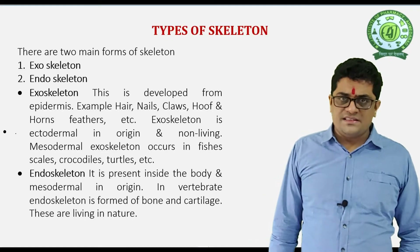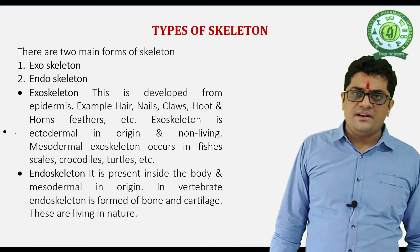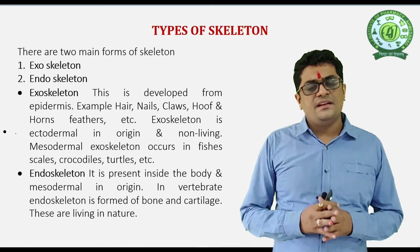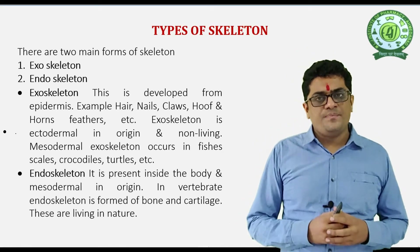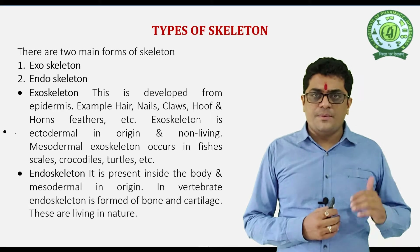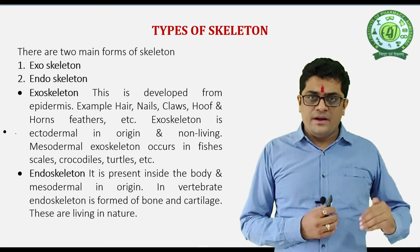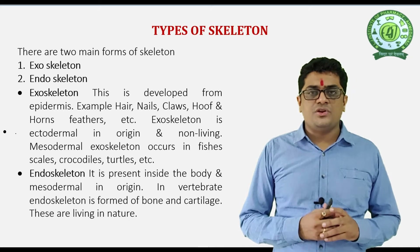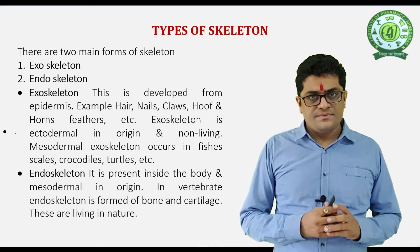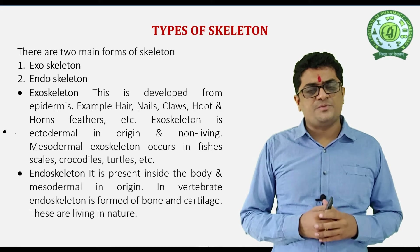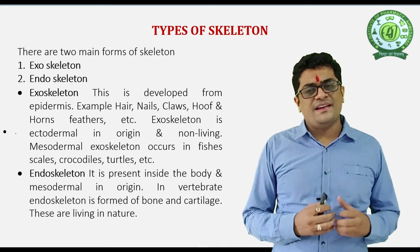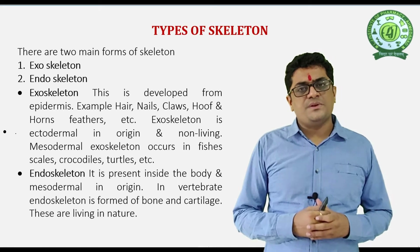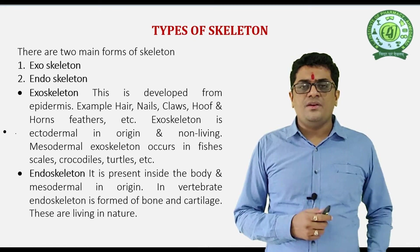In the Skeletal System, there are mainly two types of skeleton. One is the Endoskeleton and another one is the Exoskeleton. The Endoskeleton is present inside the body and is responsible for supporting the body as well as for the formation of blood cells from the red bone marrow. The Exoskeleton is present outside the body, like nails and hair.